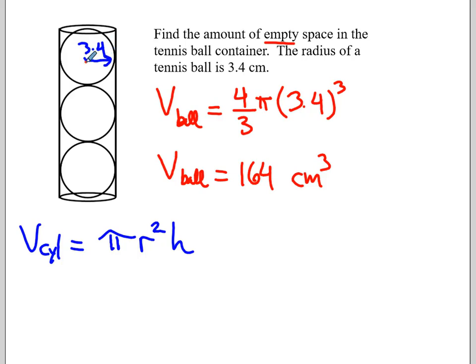But what I can also do is these are also 3.4's and we see that there are six of them. So the height of this can is 6 times 3.4. That's some hidden information I have to learn to look for. And so the height of this can is 20.4 centimeters.